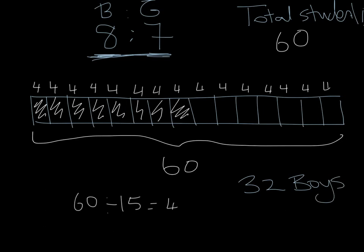How many were girls? We know that there's going to be 1, 2, 3, 4, 5, 6, 7 groups of 4 which is 28 girls.